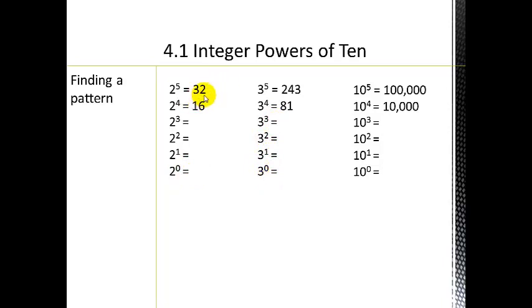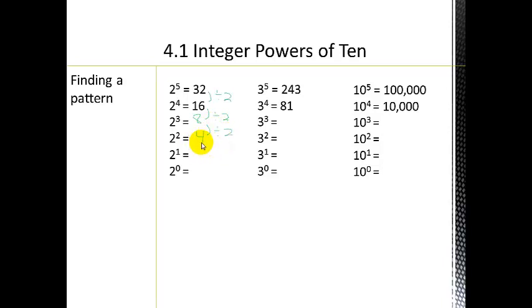Coming back, we see 32 and 16. If I take 32 and divide it by 2, I get 16. Then 2 cubed is 8, and 2 squared is 4. The pattern is dividing by 2 each time: 32, 16, 8, 4. Continuing: 4 divided by 2 is 2, and 2 divided by 2 is not 0 — it's 1.